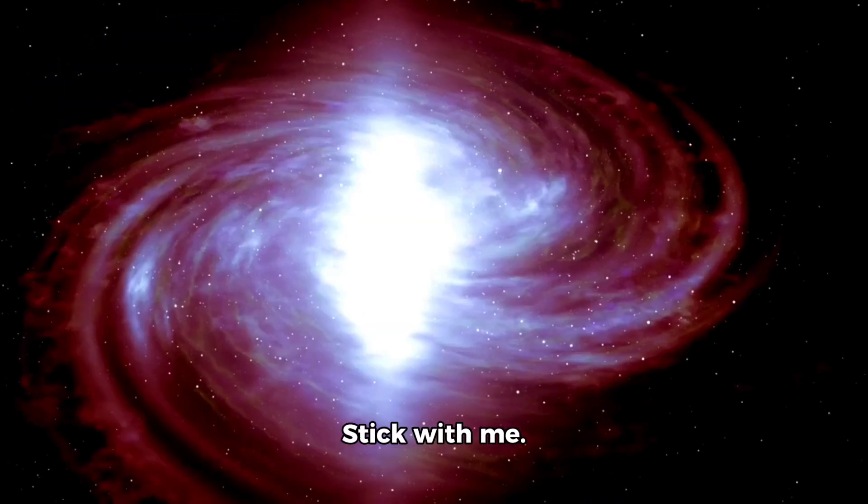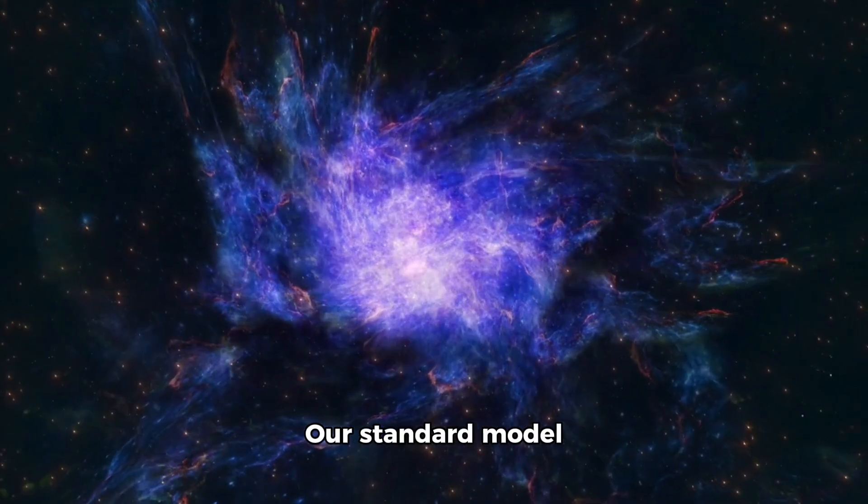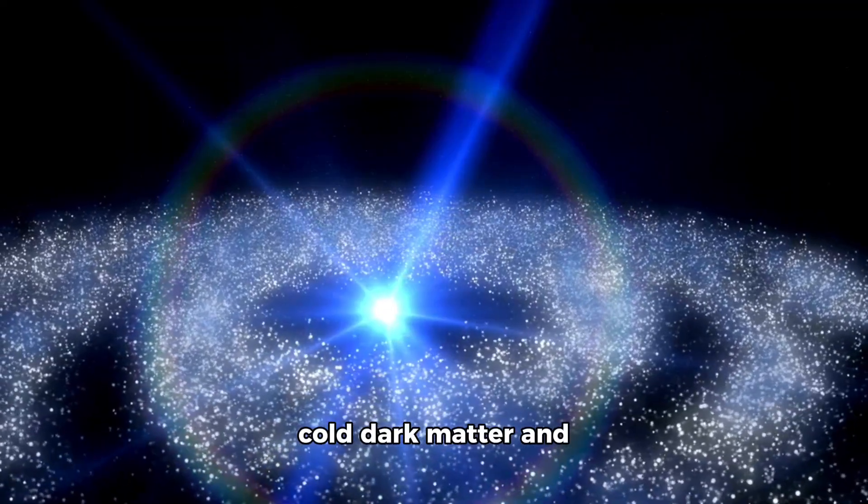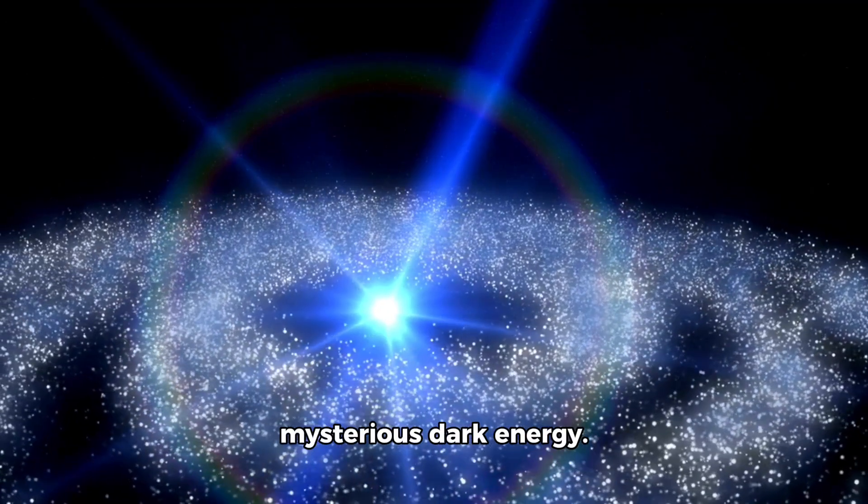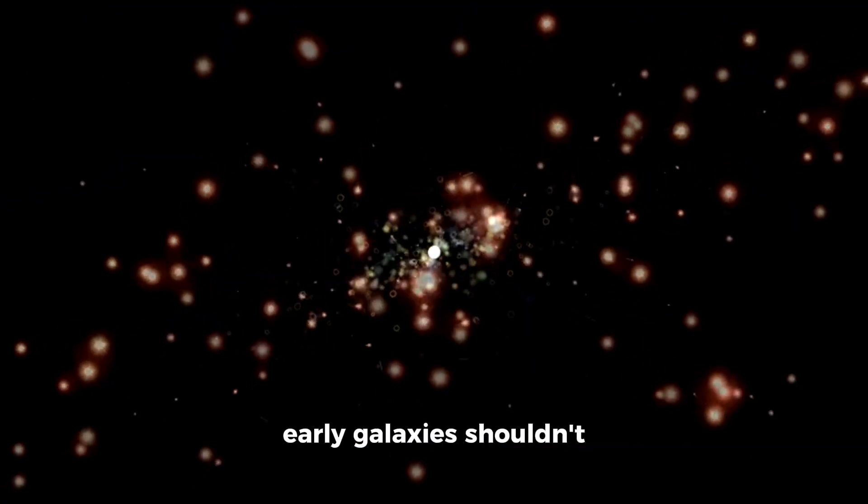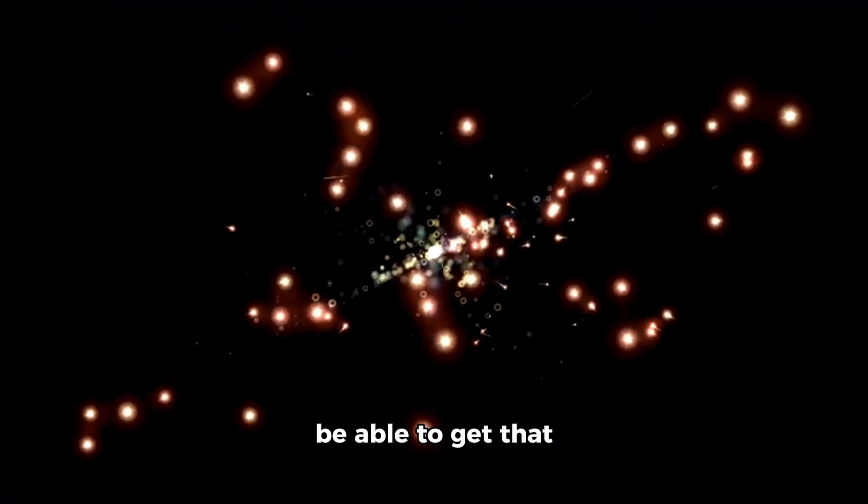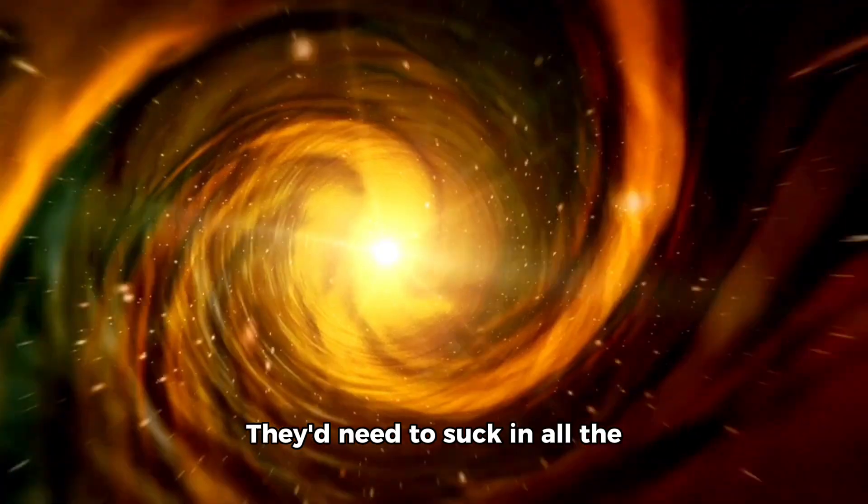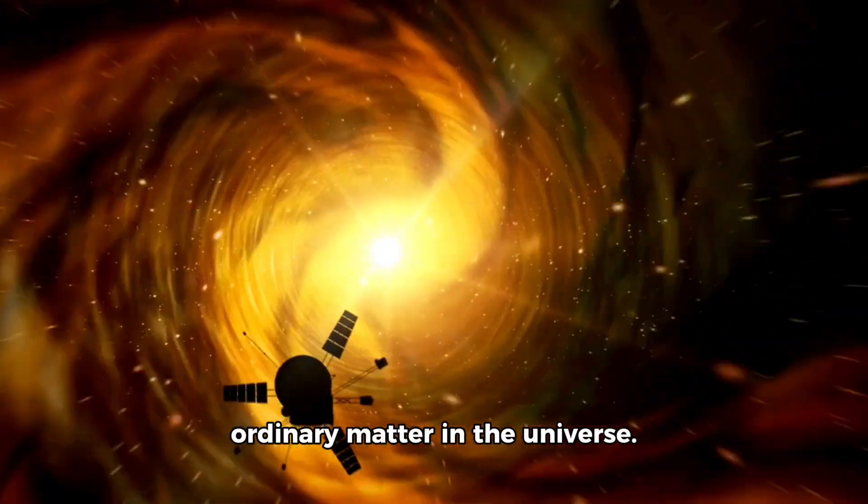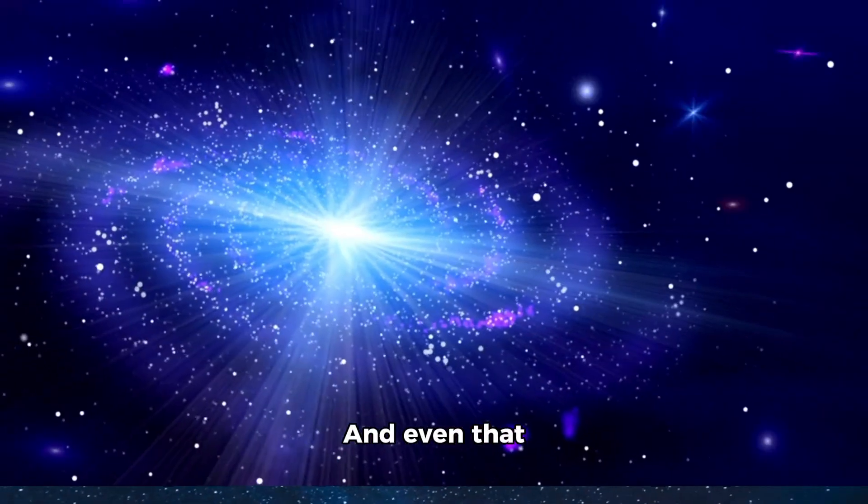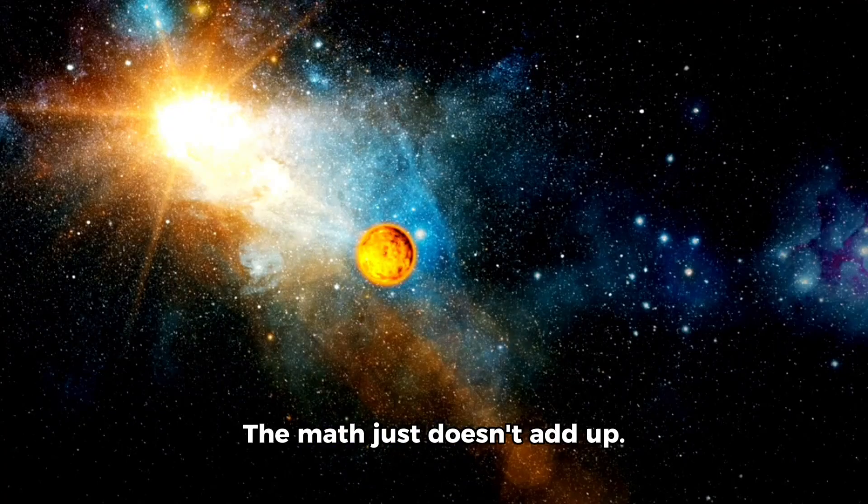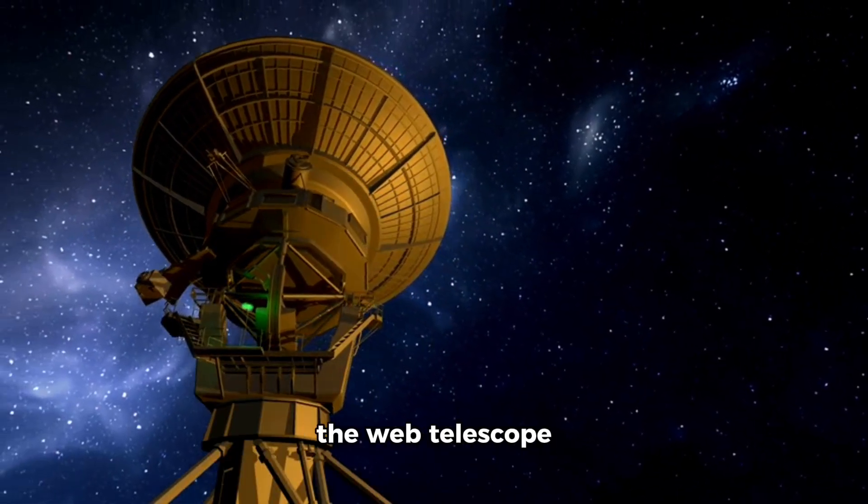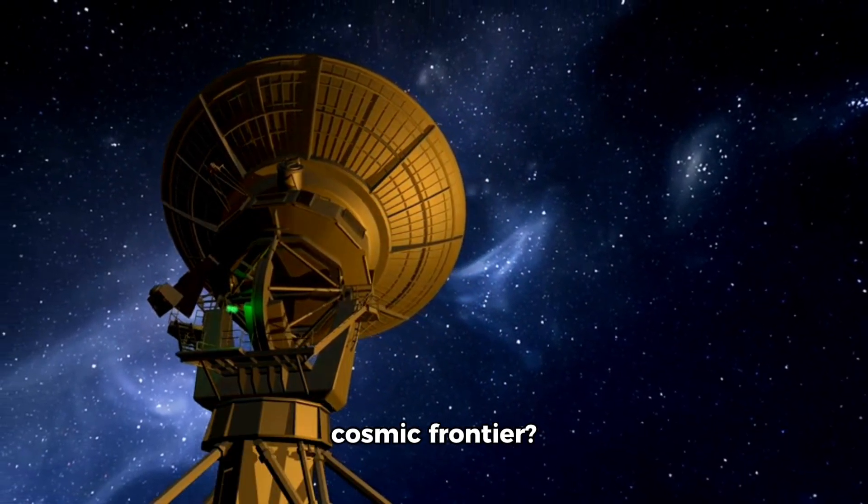Here's the technical bit. Stick with me. Our standard model Lambda-CDM says the universe is made up of cold dark matter and mysterious dark energy. According to this model, early galaxies shouldn't be able to get that massive so quickly to reach the size of what Webb is seeing. They'd need to suck in all the ordinary matter in the universe. And even that wouldn't be enough. The math just doesn't add up.